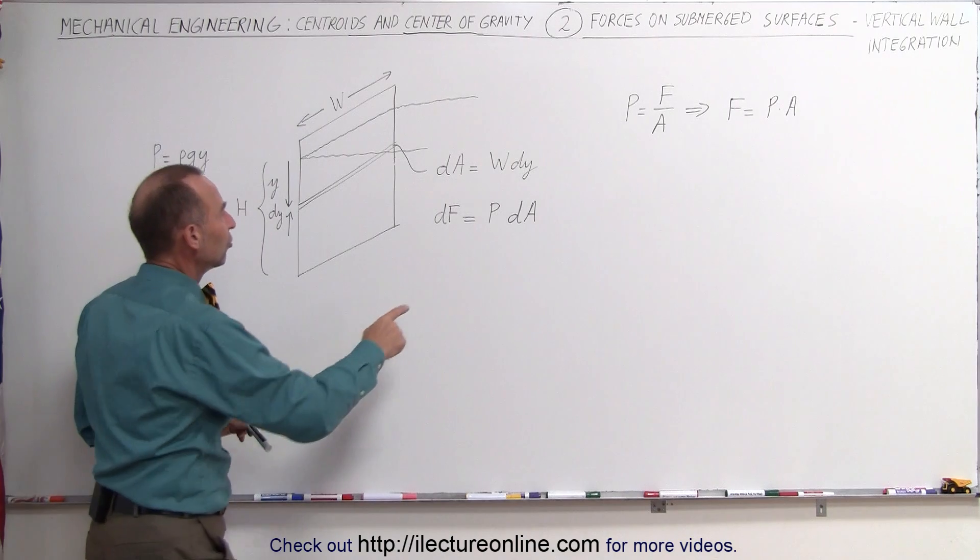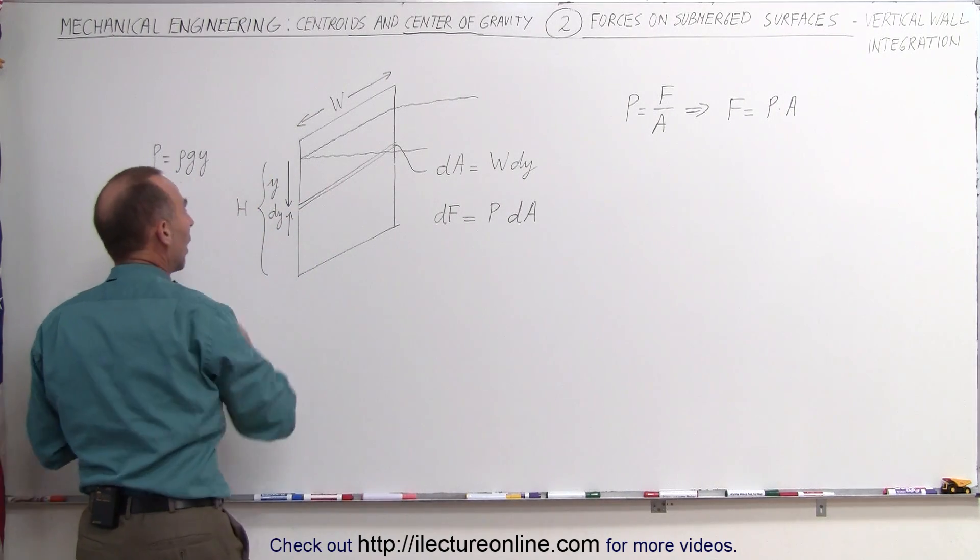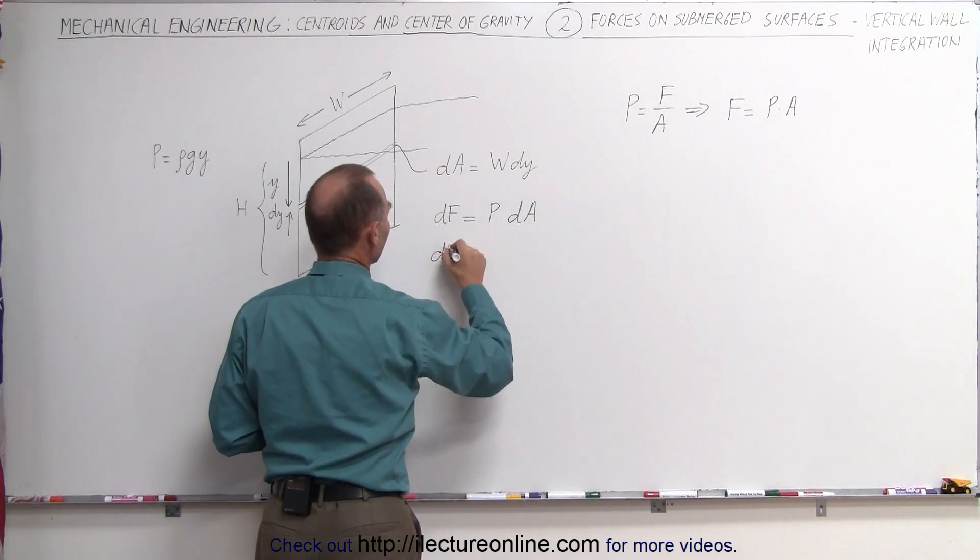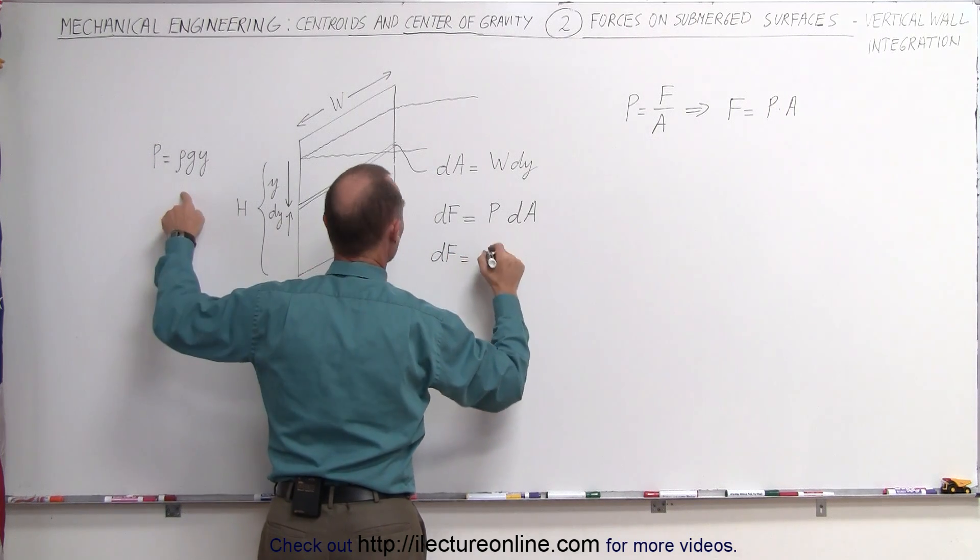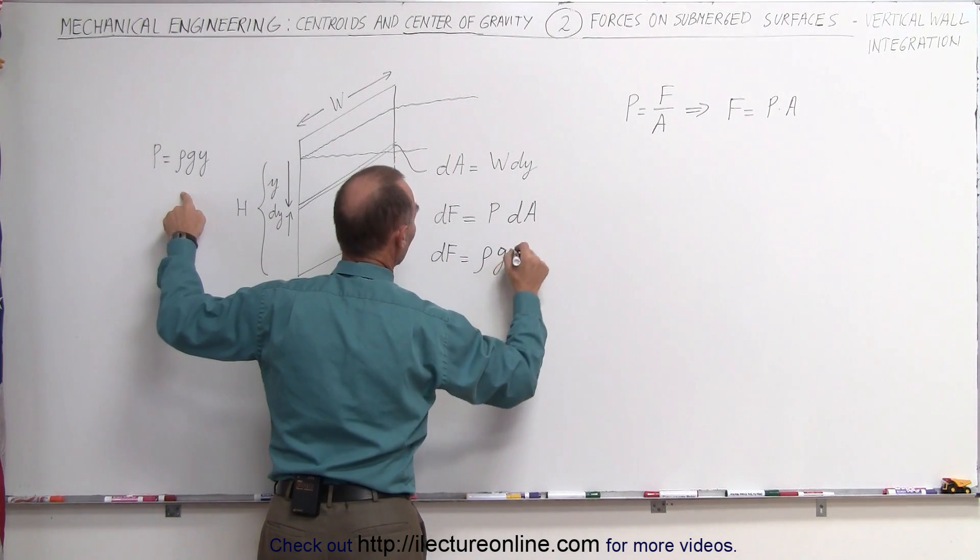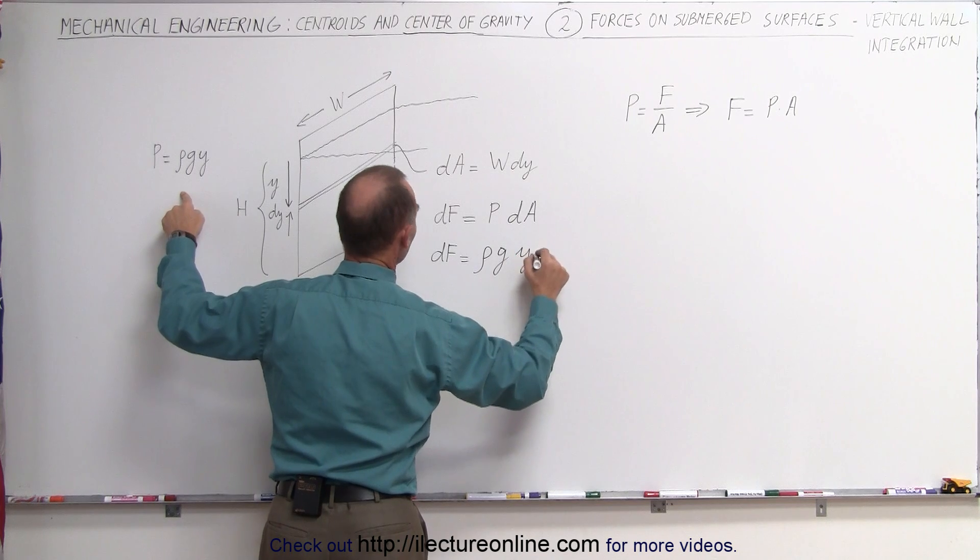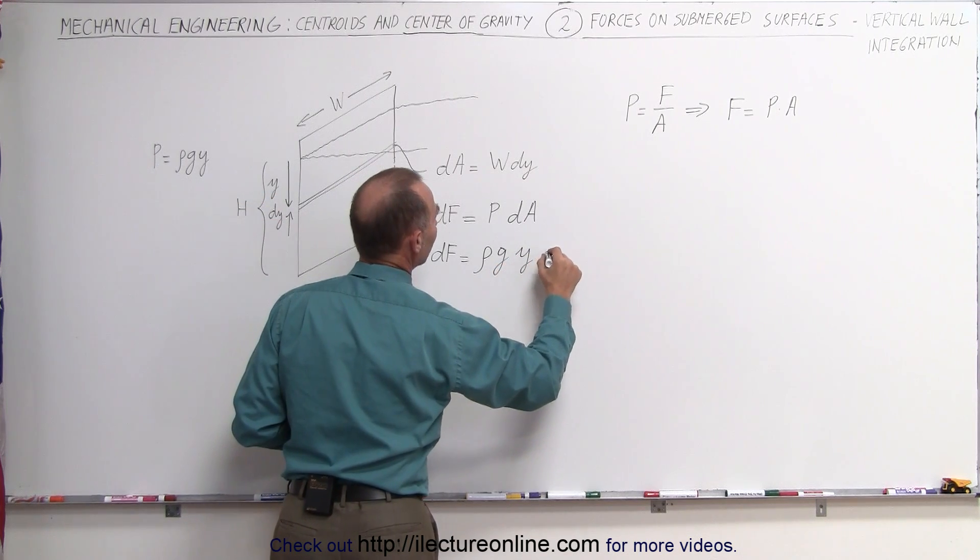Now the pressure at this location can be found to be ρgy, so therefore dF can be written as the pressure, which is the density, times acceleration due to gravity, times the depth of that little strip, times dA.